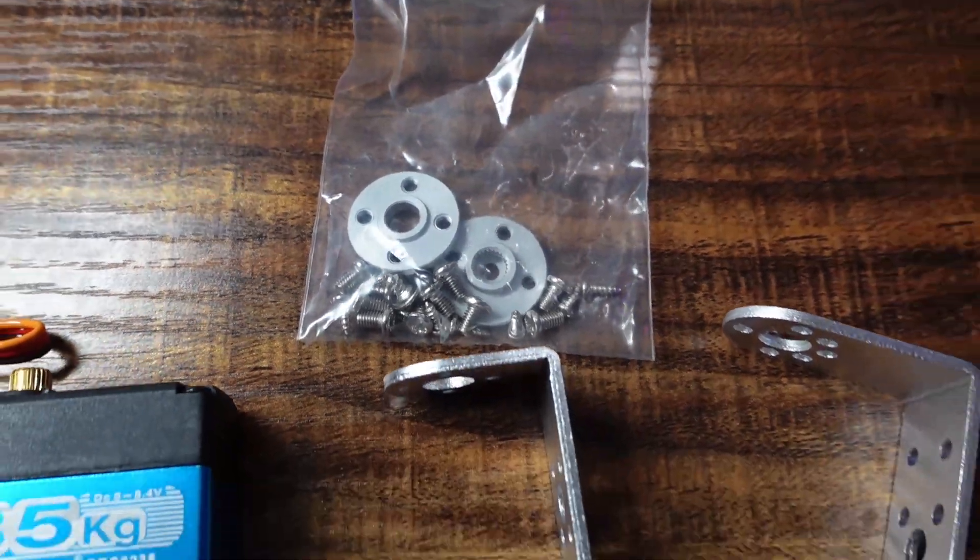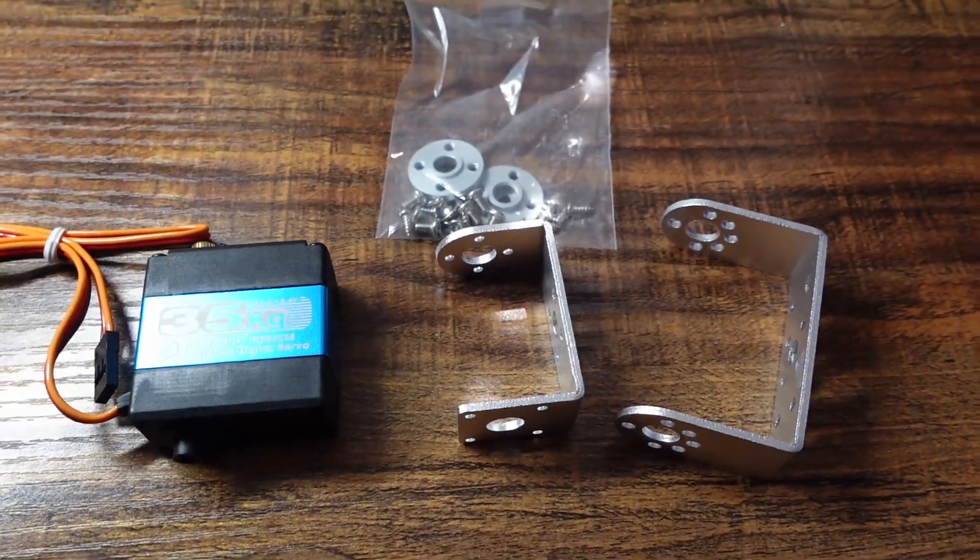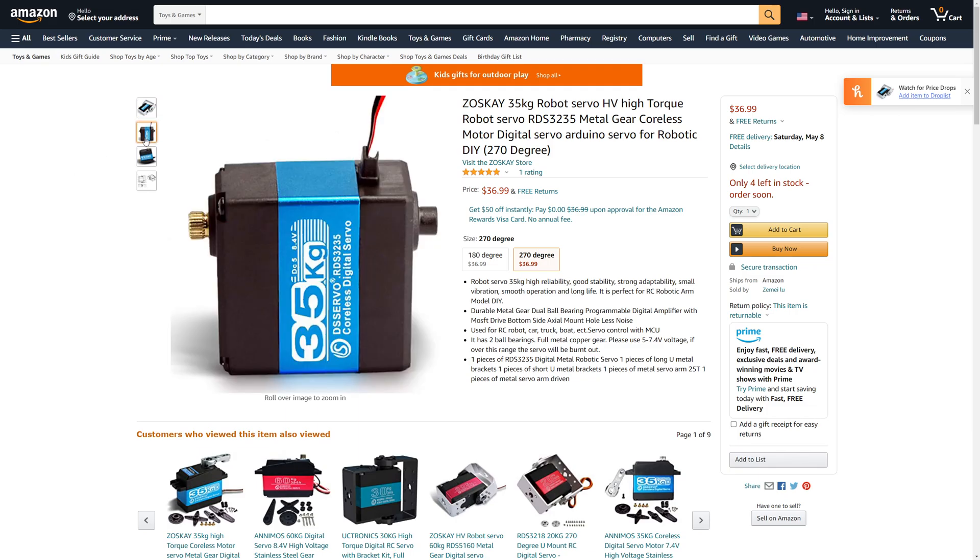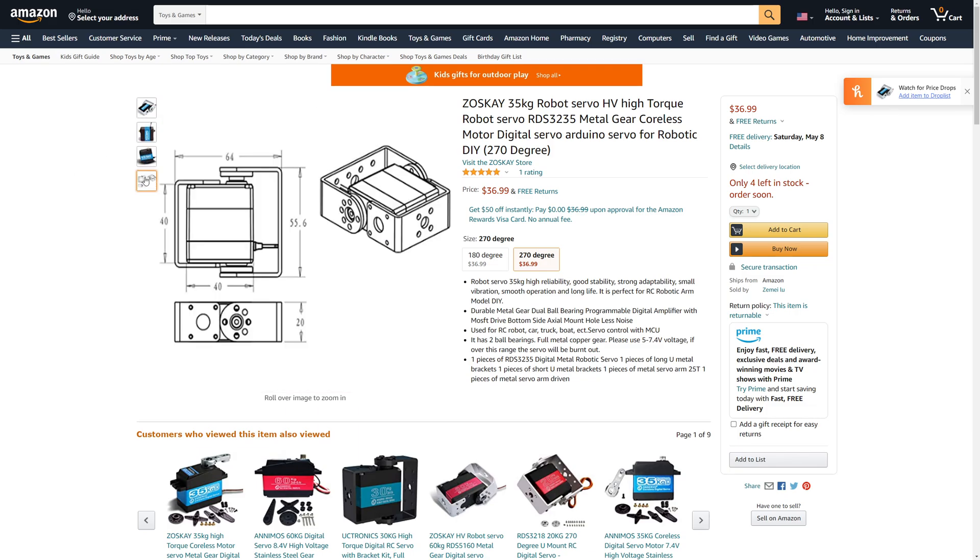But it can deliver up to 35 kilogram centimeters of torque or around 30 pound force inches of torque. Which means a 3 inch long saw arm could be forced into an opponent with 10 pounds of linear force or a 2 inch arm with 15 pounds, etc. More importantly, it's fast.